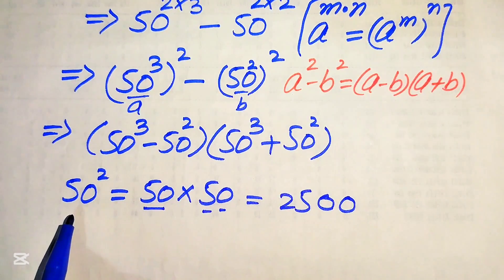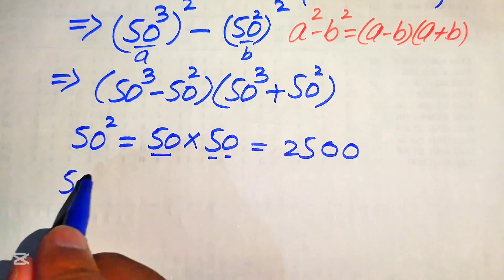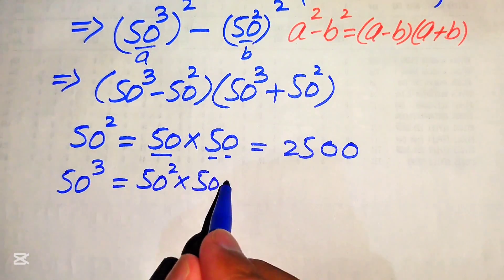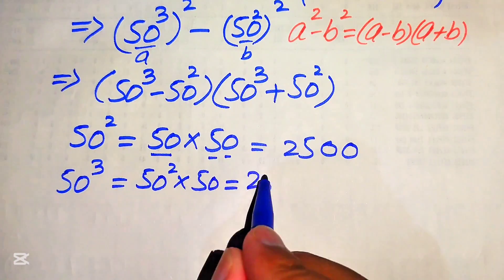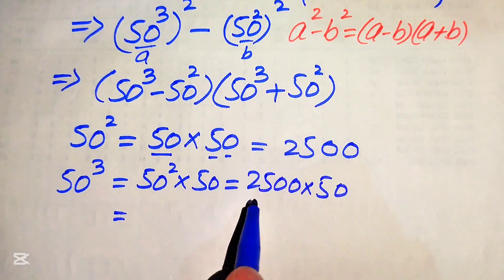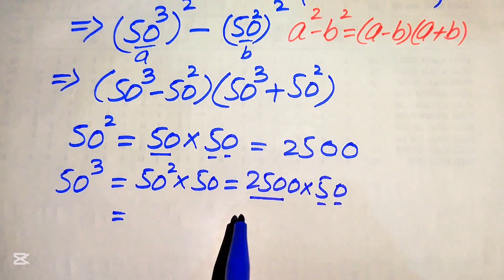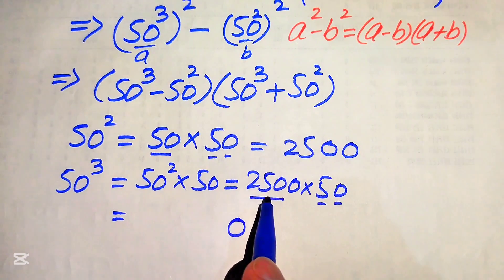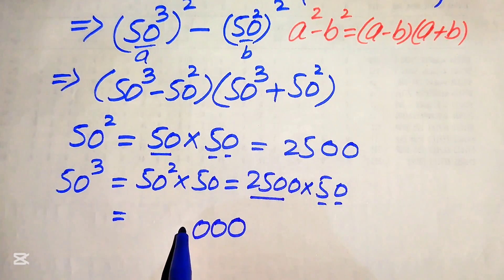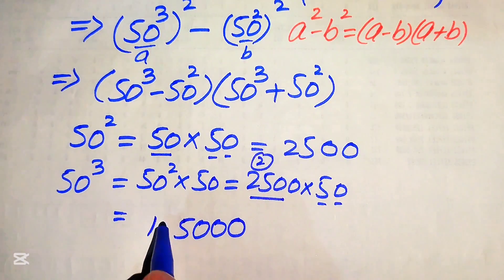So 50 squared equals 2500. Now we find 50 cubed, which means 50 squared multiplied by 50, so 2500 multiplied by 50. Multiplying: 0 times the number gives 0; then 5 times: 5 zeros are 0, 5 zeros are 0, 5 fives are 25 — write 5 carry 2; 5 tens are 10, plus 2 becomes 12.